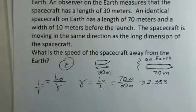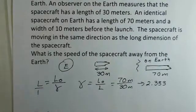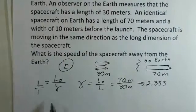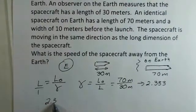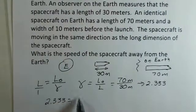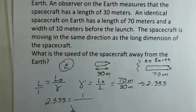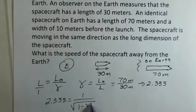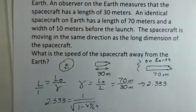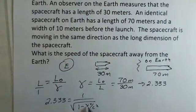Let's put that into our calculation for gamma. Gamma is equal to 1 divided by the square root of 1 minus v² over c². So we know that gamma is 2.333. This v is buried in this formula: it's in a denominator, it's underneath the square root, it has a square on it.